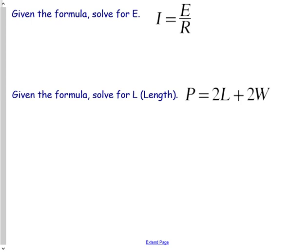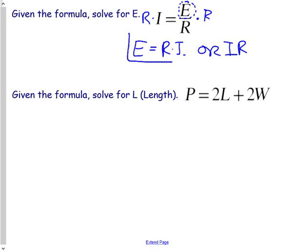Next, given the formula i equals e over r, solve for e. So again we've got e, circle it. And then what is going on? This is e divided by r. So then we're going to do the opposite of divided by r, which is times r on both sides. So we're going to get e equals r times i or i times r. Order doesn't matter there. And that is our answer: e equals r times i.